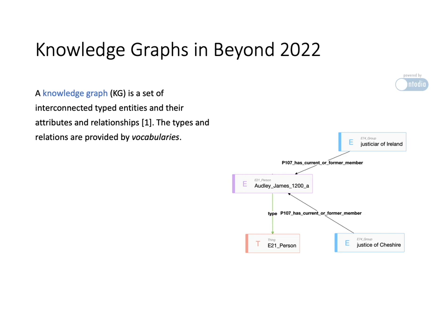Here we have an entity that represents a thing that is of the type person. That person, James Audley, was apparently a member of two groups.